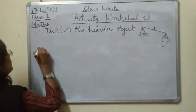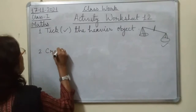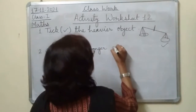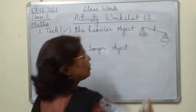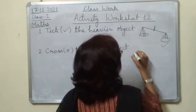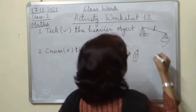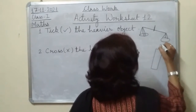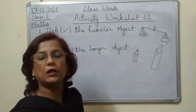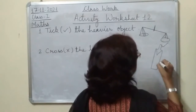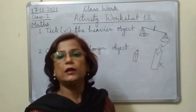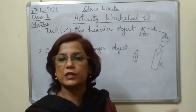The second question is: cross the longer object. The objects shown are a pencil and a bat. Which is longer? Just by observation we can say that the bat is longer. In this chapter we have not done actual measurement, but we can say which is heavier or lighter, and which is longer just by looking.